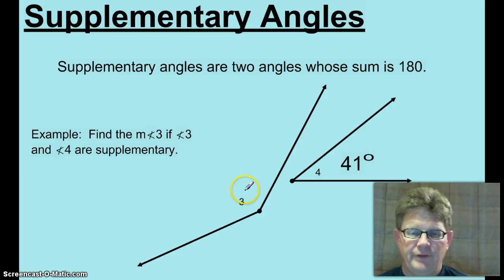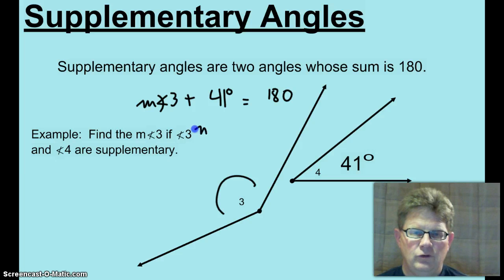Example, find the measure of angle 3 right here if angle 3 and angle 4 are supplementary. Okay, so the measure of angle 3 plus 41 degrees equals 180. Subtract 41 from both sides and the measure of angle 3 equals 139 degrees.